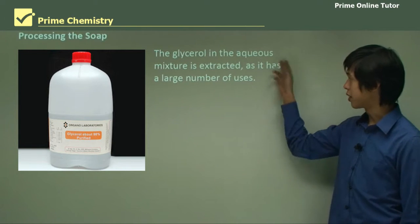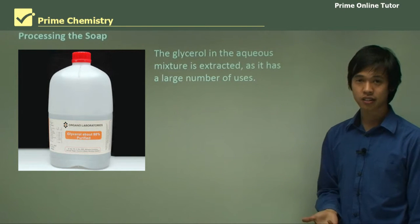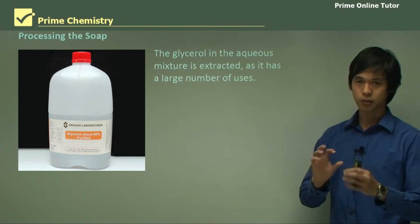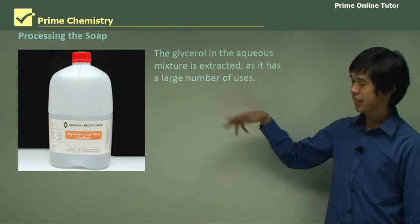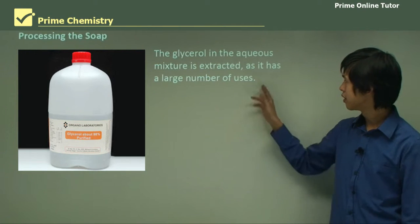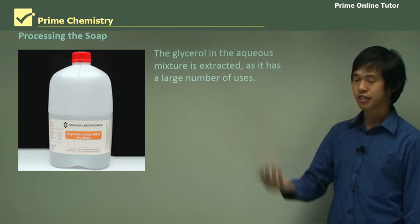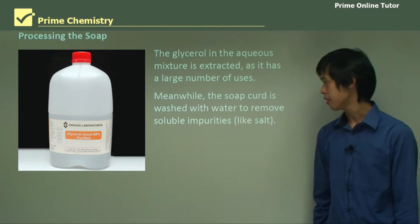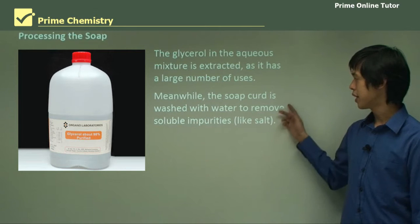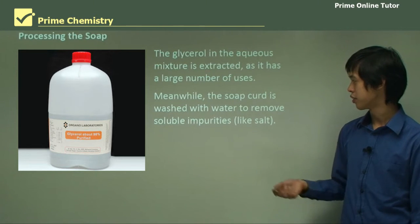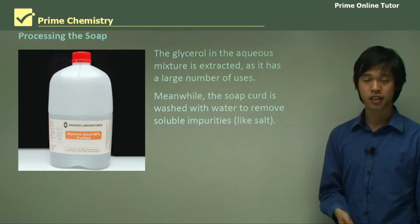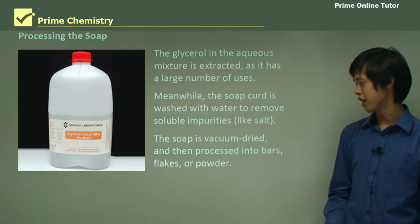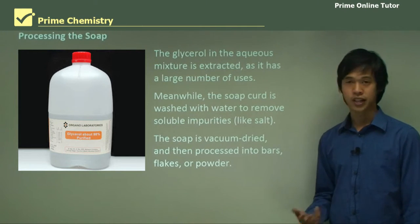The glycerol in the aqueous solution is extracted, because glycerol bonds well with water due to its many hydrogen bonds. It's extracted because it has a lot of uses. Meanwhile, the soap curd is washed to remove soluble impurities like salt or NaOH. The soap is then vacuum dried and processed into bars, flakes, or powder.